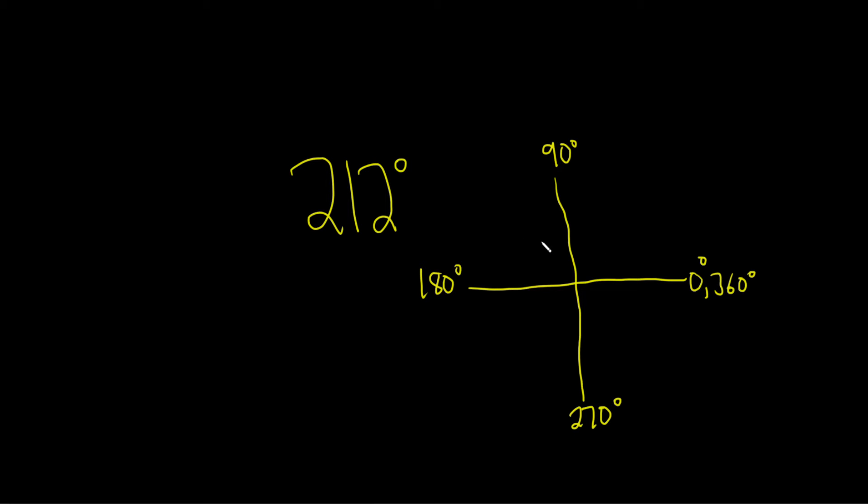Now using this information, we can give a very rough sketch of our angle here, which is 212. We know that it's bigger than 180, so it's going to be down here. So maybe it's this. Maybe that's our angle. There we go. There's our rough sketch of 212 degrees.